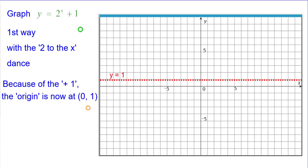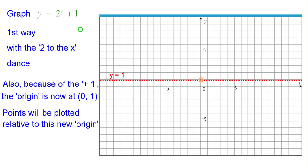Also because of the plus 1, a new origin is going to be at 0, 1. Everything is shifted up 1. And points will be plotted relative to this new origin.